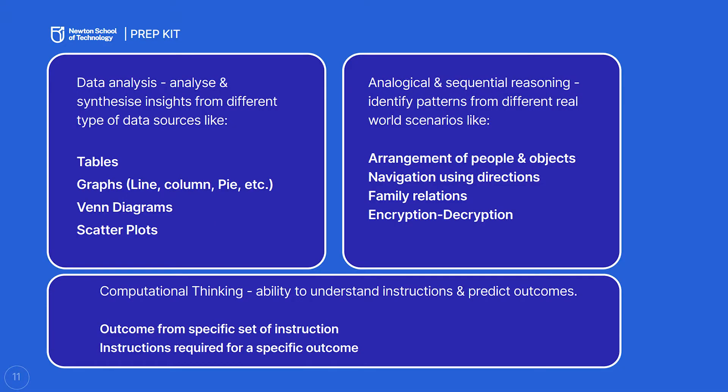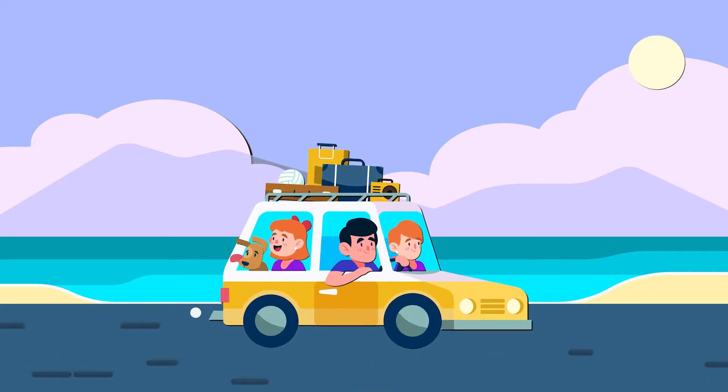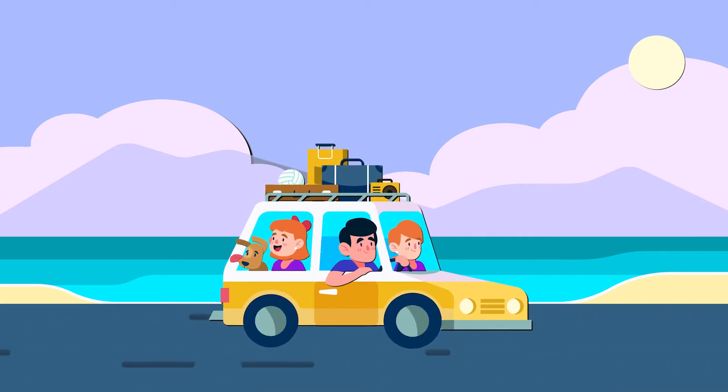In the logical reasoning and data interpretation section, some real world scenario and data will be given. The data can be in the form of a table, a pie chart, a bar graph, or a Venn diagram. Or it can be a real world scenario — for example, 10 people sitting at a dinner table with a seating arrangement, or direction-sense questions where you start from a point and follow directions like move forward, turn right, turn left. It can also involve family relations — identifying how two people are related based on given hints.